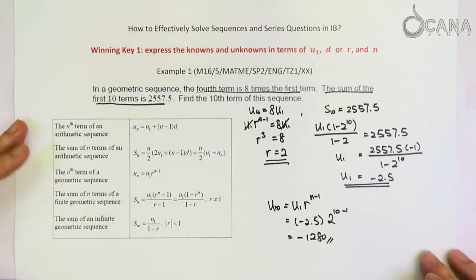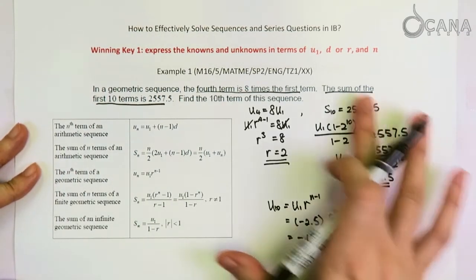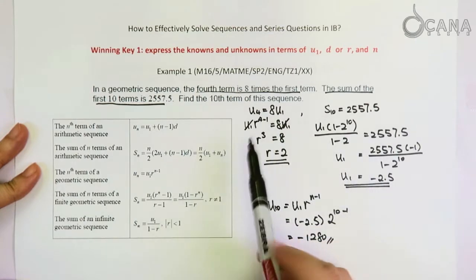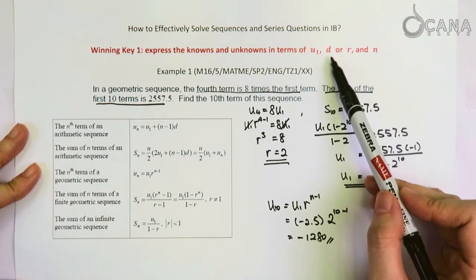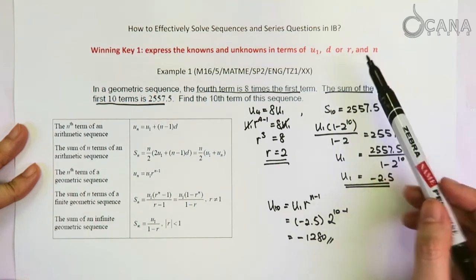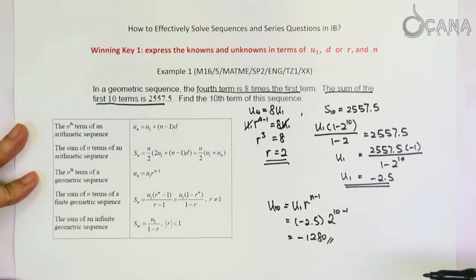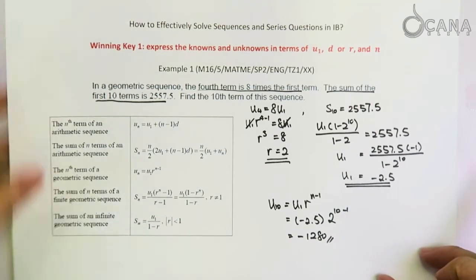We just plug this into a calculator to get that U10 is negative 1,280. This is how we use this point by expressing everything in terms of U1 and the common difference or the common ratio and N, and then try to solve the equations to get the answers that we want. This is the first technique that you should know.